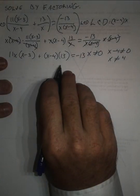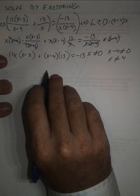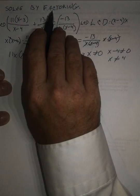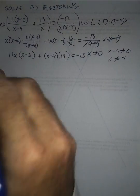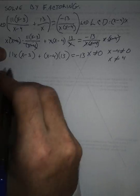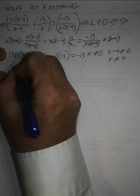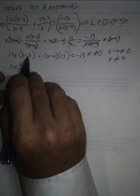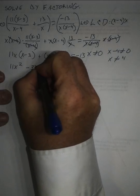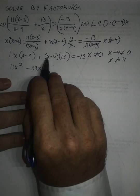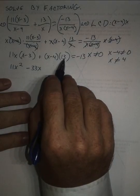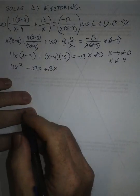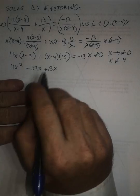Now I need to simplify, collect all of my terms on one side, and have a 0 on the other, and then hopefully I can solve by factoring. So at this point, let's use the distributive property. 11x times x is 11x². 11x times negative 3 is negative 33x.